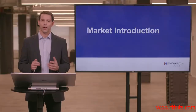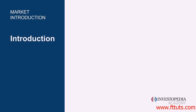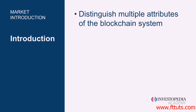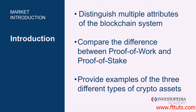Before you start investing in crypto assets, you need to understand where they come from and how they work. By the end of this section, you'll be able to distinguish between multiple attributes of the blockchain system, compare the differences between proof of work and proof of stake, and provide examples of the three different types of crypto assets.